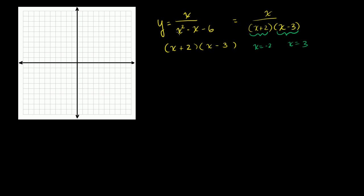If x is equal to negative 2 or positive 3, you're going to get a 0 in the denominator — y will be undefined. So there's a vertical asymptote at x equals negative 2, and another vertical asymptote at x equals 3.